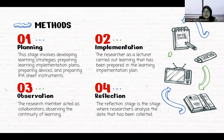The main researcher acts as a lecturer who taught the class, while a research member acts as collaborator in implementing classroom action research. The second method is implementation, where the researcher as lecturer carried out learning that has been prepared in the learning implementation plan. During the learning process, research members as collaborators help the lecturer observe the continuity of learning.